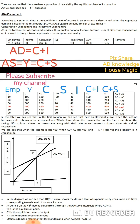Aggregate demand equals C plus I — consumption plus investment. Aggregate supply is the total amount of output of goods and services, and it is equal to national income. Income is spent either on consumption or it is saved, so aggregate supply Y equals C plus S — consumption expenditure plus saving.